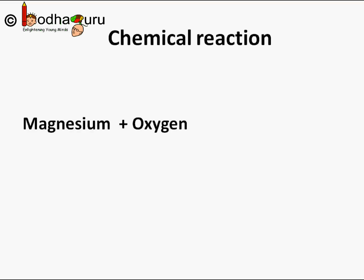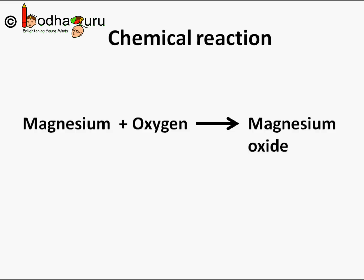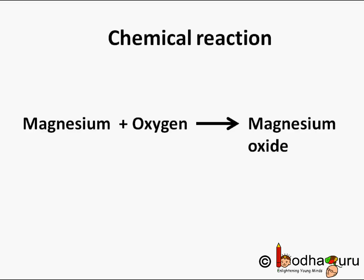You already know a chemical reaction represents the chemical change in which one or more new substances are formed. So, in this chemical reaction, two substances combined to form a new substance. The two substances, that is magnesium and oxygen, reacted in presence of air to form a new substance which is the white powder, and it is magnesium oxide.